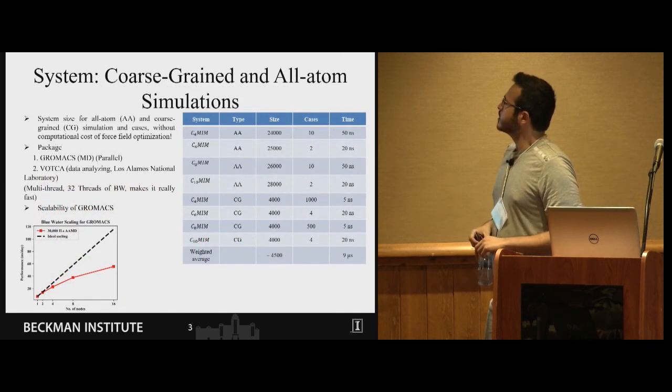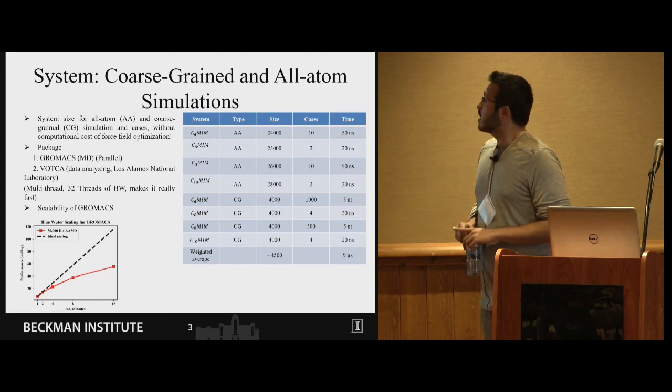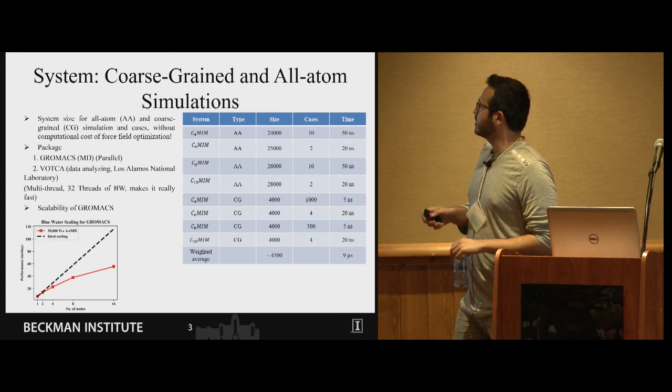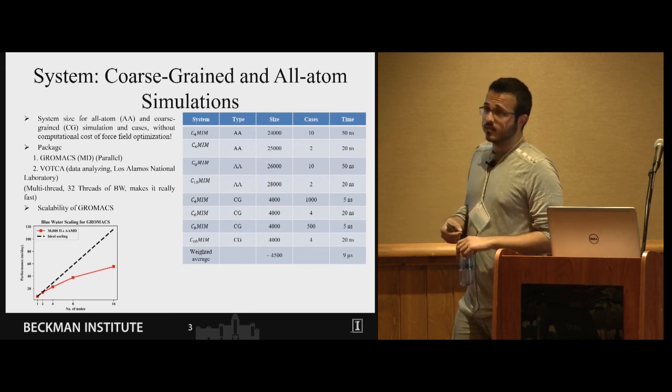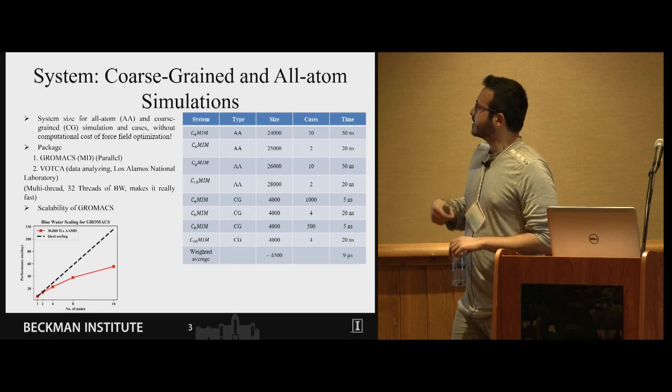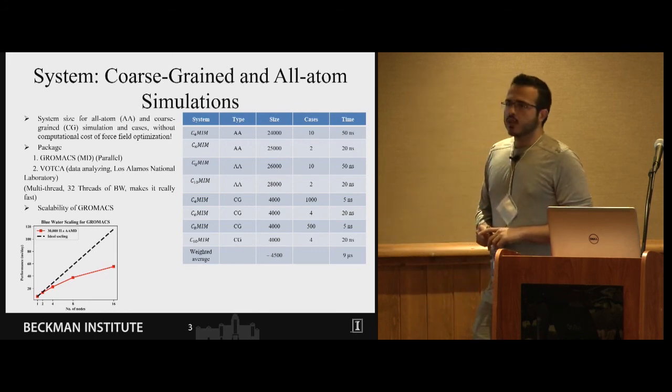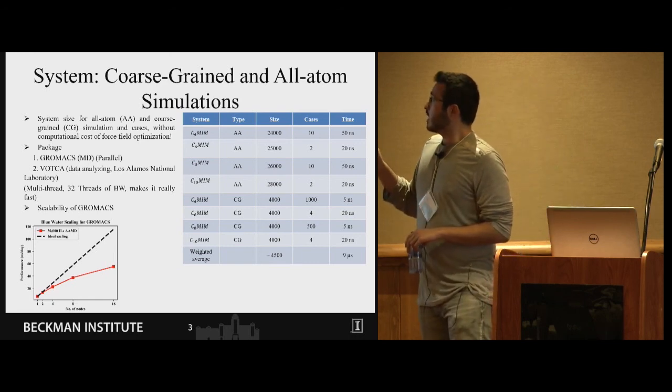Here is a list of the systems that we studied from both all atom and coarse-grained systems. We did so much simulation in both all atom and CG representation for different alkyl chain ionic liquids that we studied here in order to reproduce a system where a coarse-grained force field can statistically represent the same system. In average we did nine microseconds of simulation at a system size of 5000 beads. It includes both all atom and CG systems.